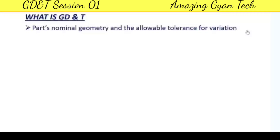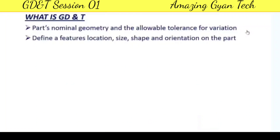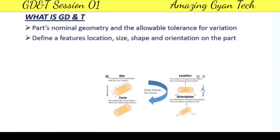Geometric Dimensioning and Tolerancing is a language of symbols used to describe a part's nominal geometry and the allowable tolerance for variation. It defines your component's geometry and gives a tolerance for how much it can vary, because no component can be manufactured without tolerance. GD&T helps us define a feature's location, shape, and orientation of the part — size, form, location, and orientation can all be controlled effectively using GD&T.